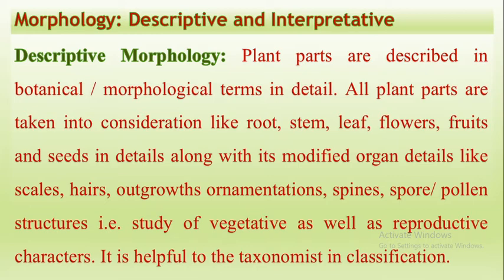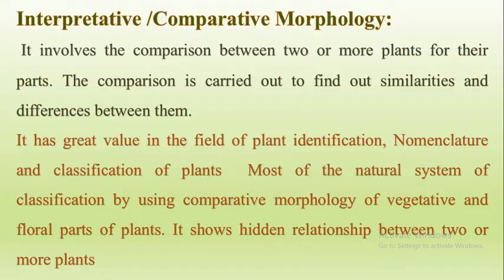Sometimes the leaves may be modified into scales, or there may be hairy structures — trichomes or outgrowths — present on the leaves. Sometimes the leaves may be modified into spines. The pollen shows different types of ornamentations. The study of vegetative as well as reproductive characters is helpful to the taxonomist in classification — that means, at the time of classification, taxonomists consider all these botanical terms or all these descriptive morphology.